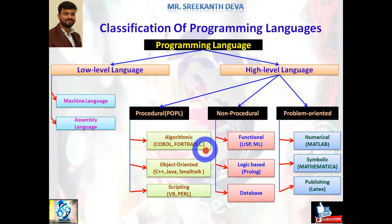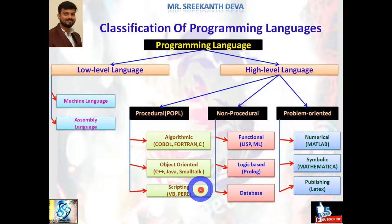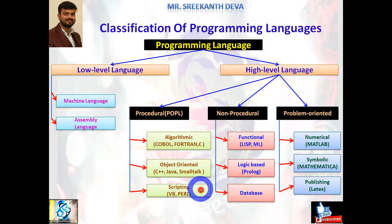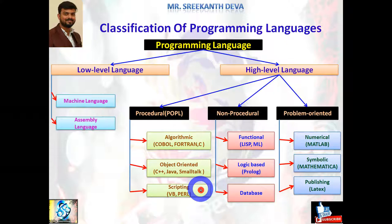A scripting language is a computer language with a series of commands within a file that is capable of being executed without being compiled. Examples include Perl, PHP, Python, and JavaScript as a client-side scripting language. The main advantages of scripting languages are: open source, allowing users to view and edit the script; no need to compile the file; easy to learn and write; easy to port between different operating systems; and much faster to develop than an actual program.